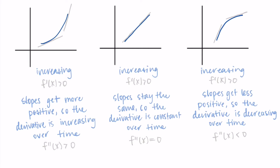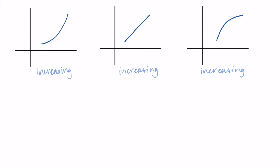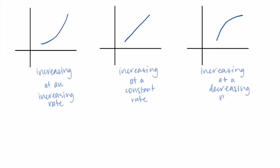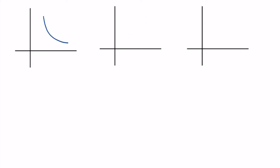So to summarize: derivative increasing was a positive second derivative, derivative constant was a zero second derivative, and derivative decreasing was a negative second derivative — increasing still goes with positive and decreasing still goes with negative, just applied to the second derivative. Mathematicians often summarize these in a shorter phrase: the first graph is increasing at an increasing rate, the middle graph is increasing at a constant rate, and the final graph is increasing at a decreasing rate. If this is a little confusing, that's totally all right — just stay with me, we're going to wrap this up in a much simpler summary at the end.